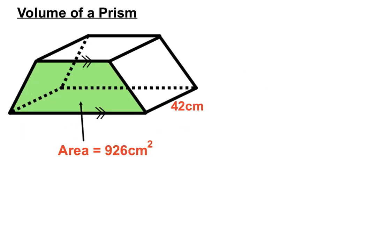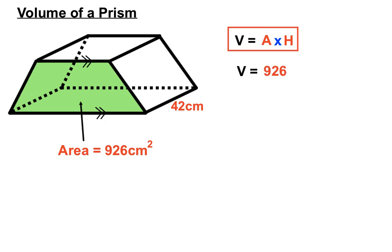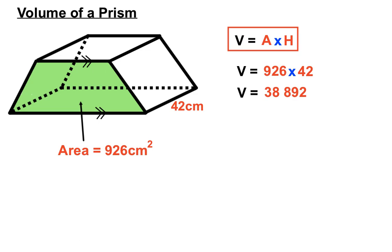Here's our trapezoidal prism. They've given us that green shaded area at the front, and how far back it goes is 42. Using our formula: volume equals area, which they gave us as 926, times the height. The height is the distance between the front face and the back end — 42 centimetres. That gives us 38,892, and using cubic units it's 38,892 centimetres cubed.